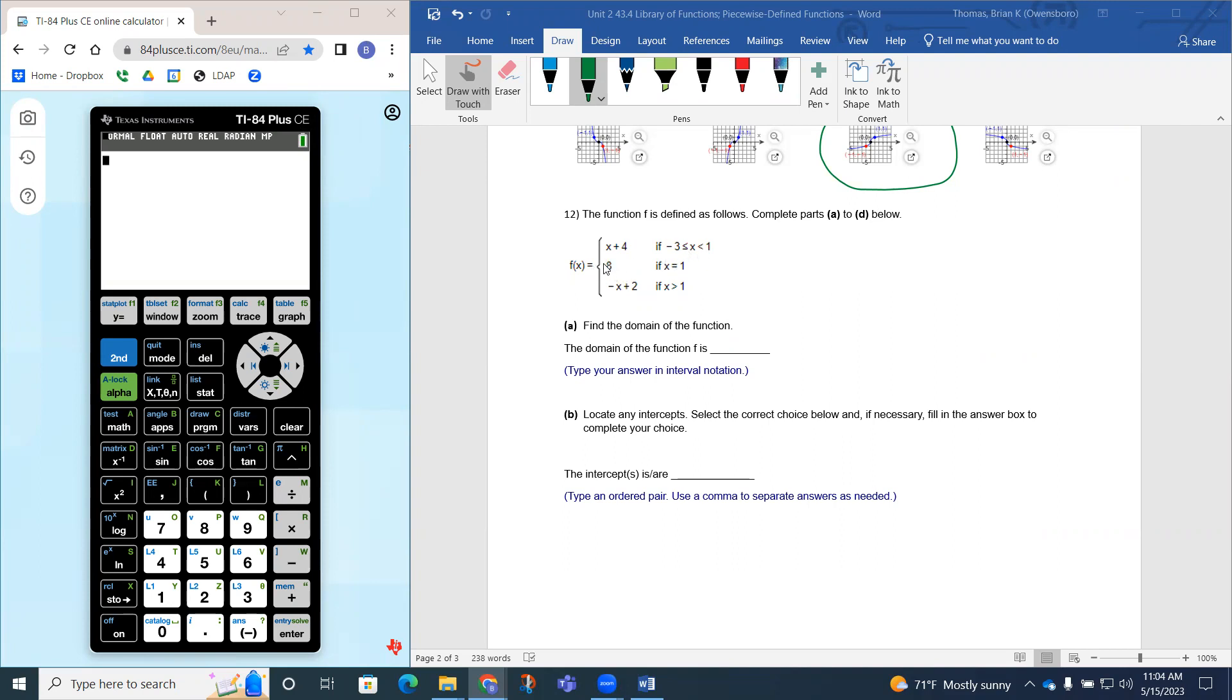f of x equals 8. The only time we use this function, the constant function, is if x is equal to 1. So if the domain is 1, then we're going to use this function. And then the third function, the third piece, is the opposite of x plus 2. We're only going to use this function if x is greater than 1.